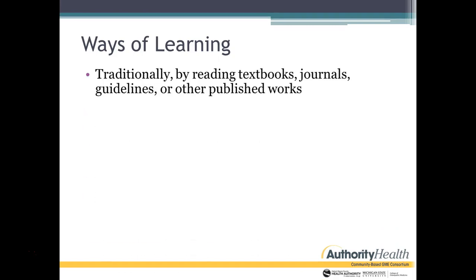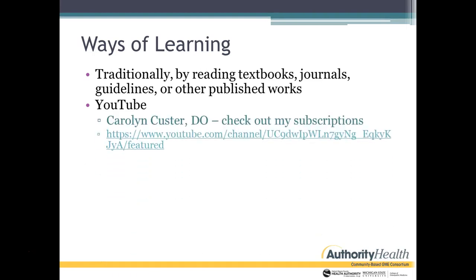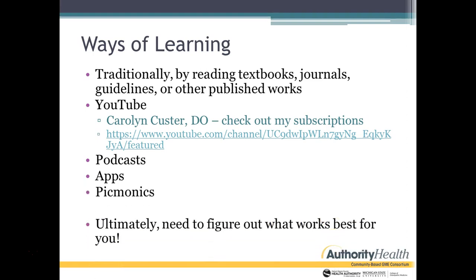Ways of learning: traditionally, older generations read textbooks, journals, newspapers, and guidelines. But now there are many new options available. There are plenty of credible videos on YouTube — this video is on my YouTube channel and is meant for orientation. Podcasts are another great source of information, especially if you have a long commute. Downloading apps on your phone can be useful — make sure they're credible, but there are many algorithm apps available. Picmonics, which uses pictures and mnemonics, is also worth trying. Ultimately, you need to figure out what works best for you.